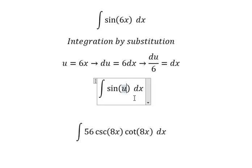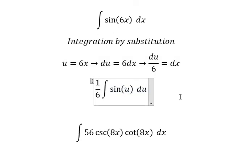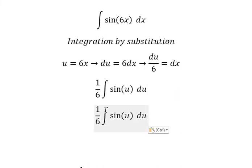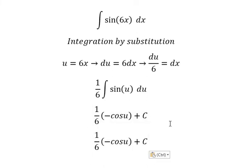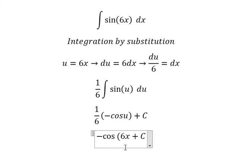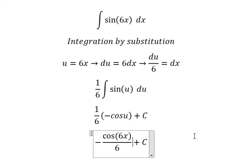6x will change to u. dx will change to du over number 6. The integral of sine u in here, we will have negative cos u, and we will have c. u will change back to 6x. And this is the final answer.